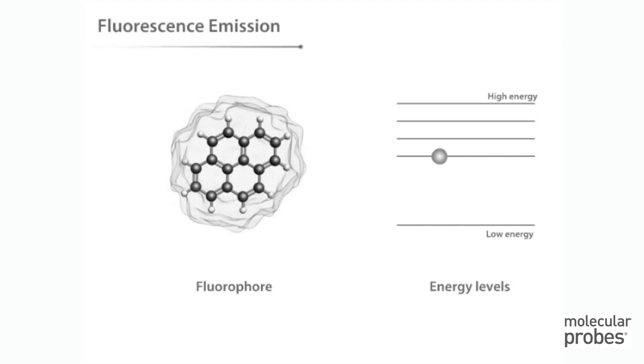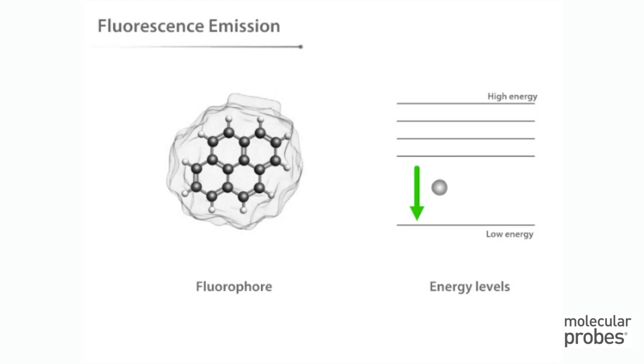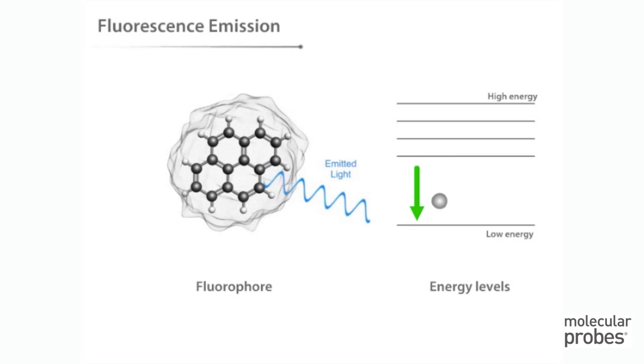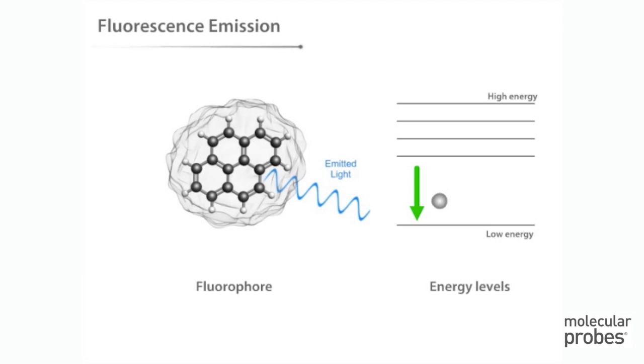Next, the fluorophore rearranges from the semi-stable excited state back to the ground state, and the excess energy is released and emitted as light. The emitted light is of lower energy, and thus longer wavelength than the absorbed light. This means that the color of the light that is emitted is different from the color of the light that has been absorbed.